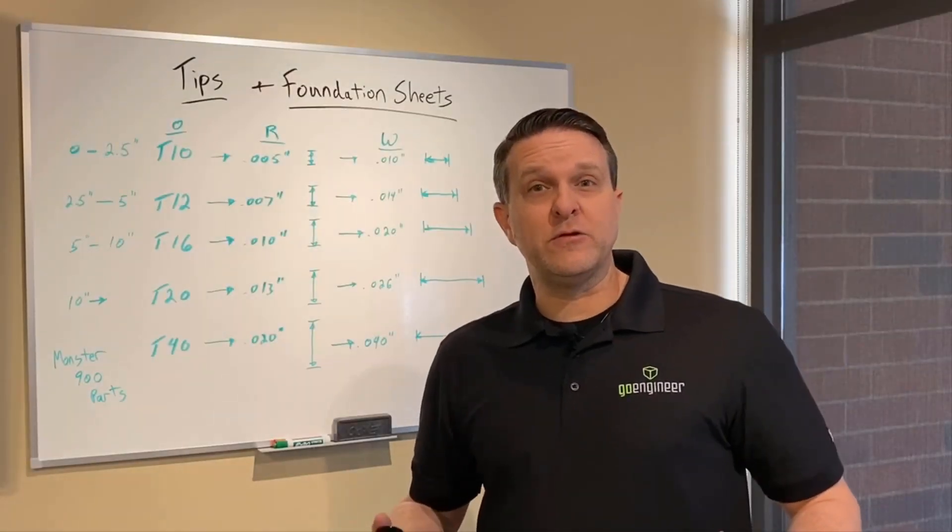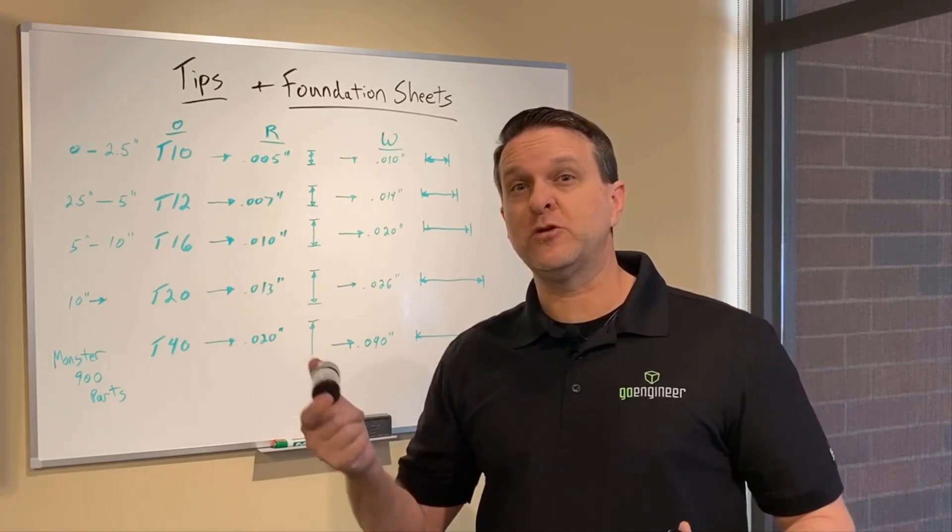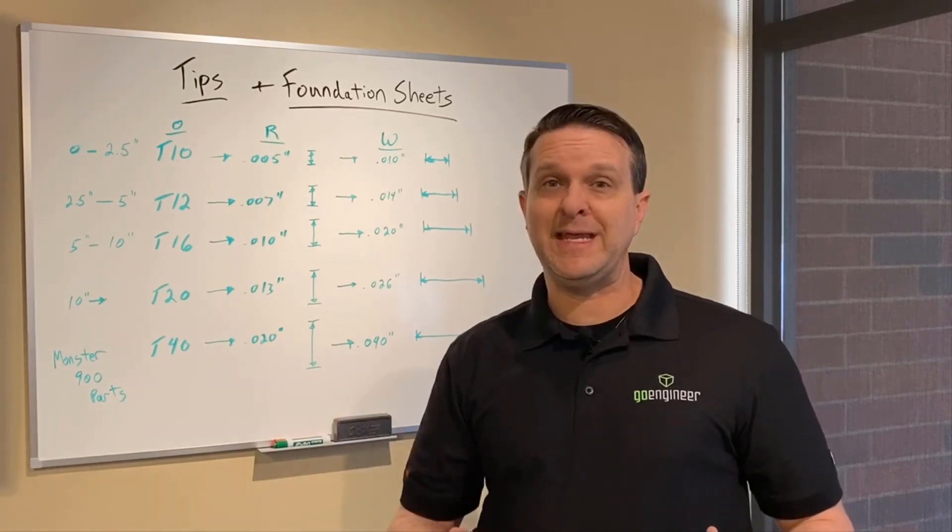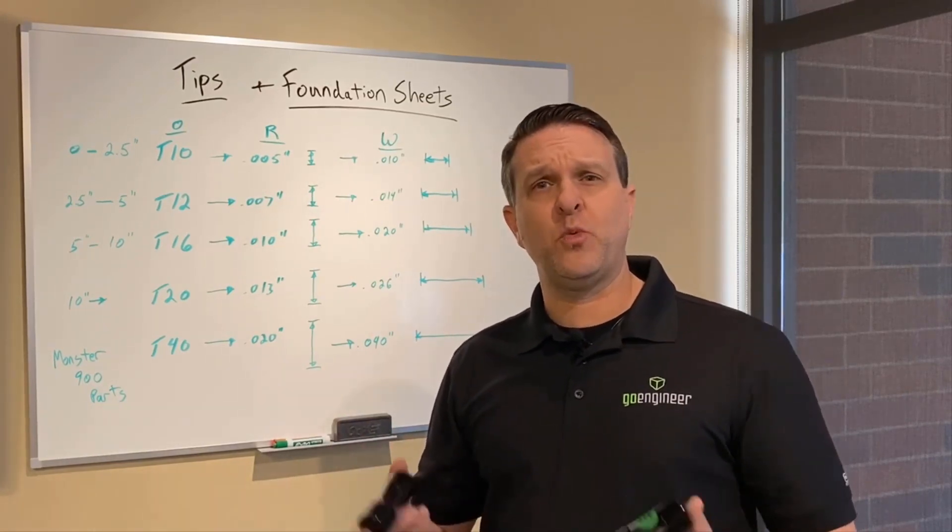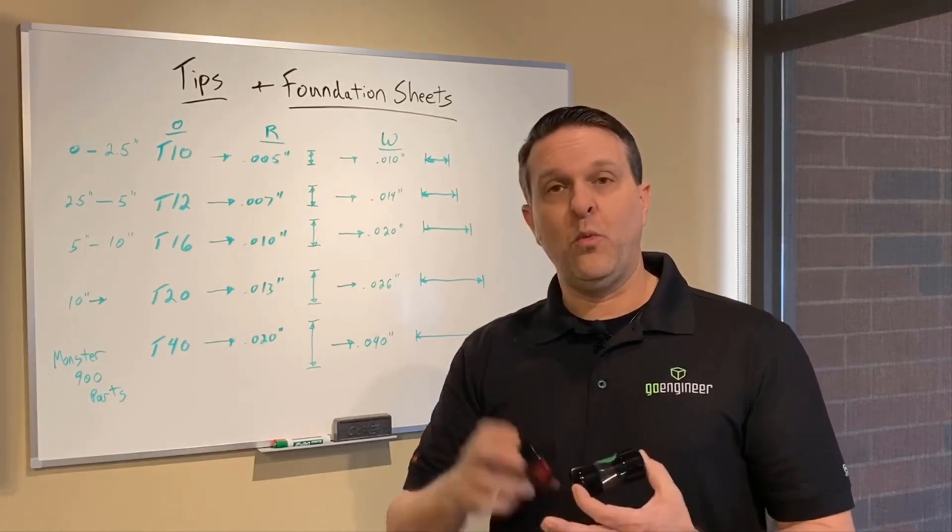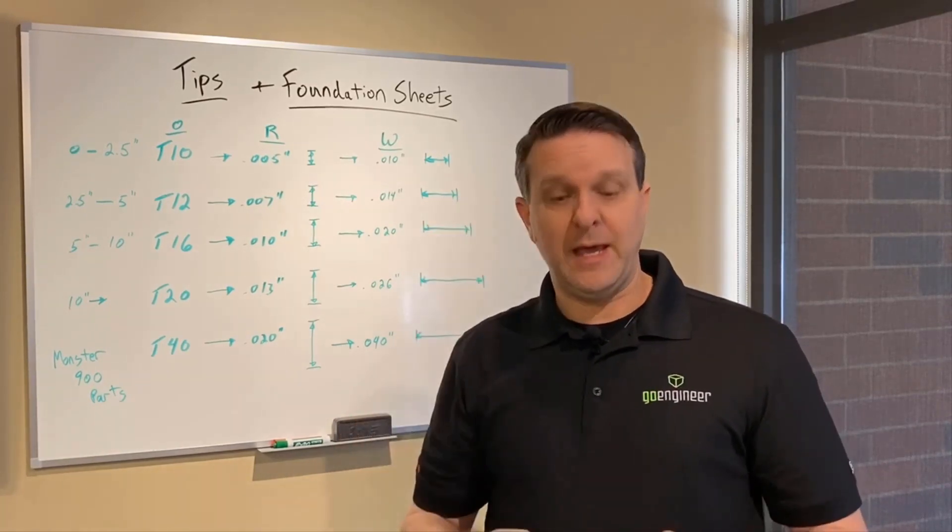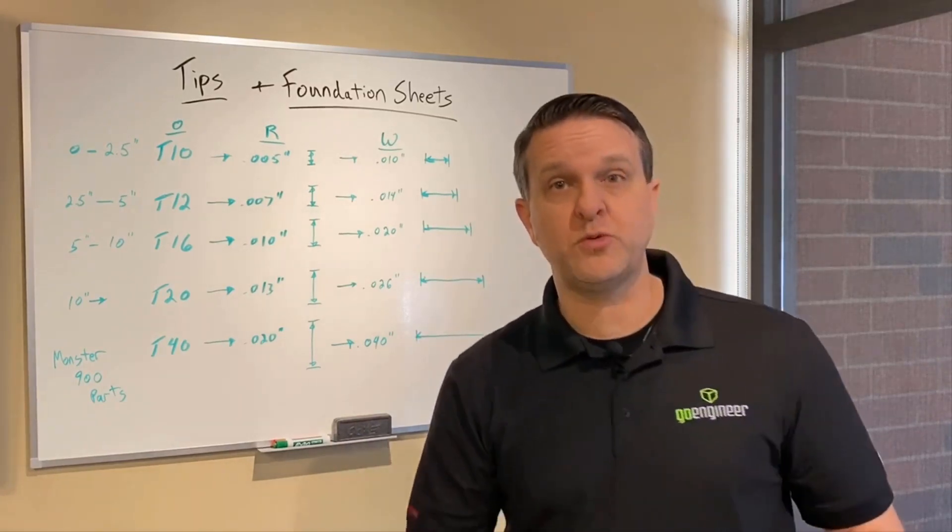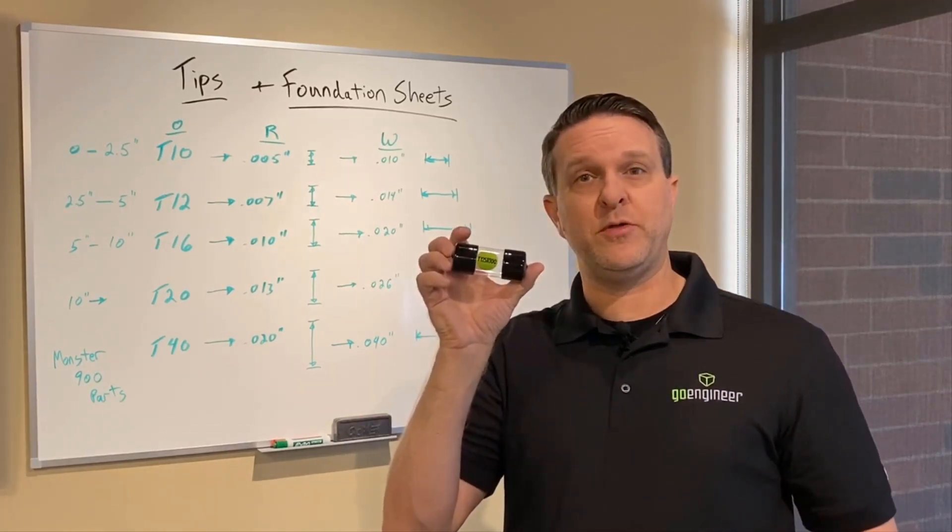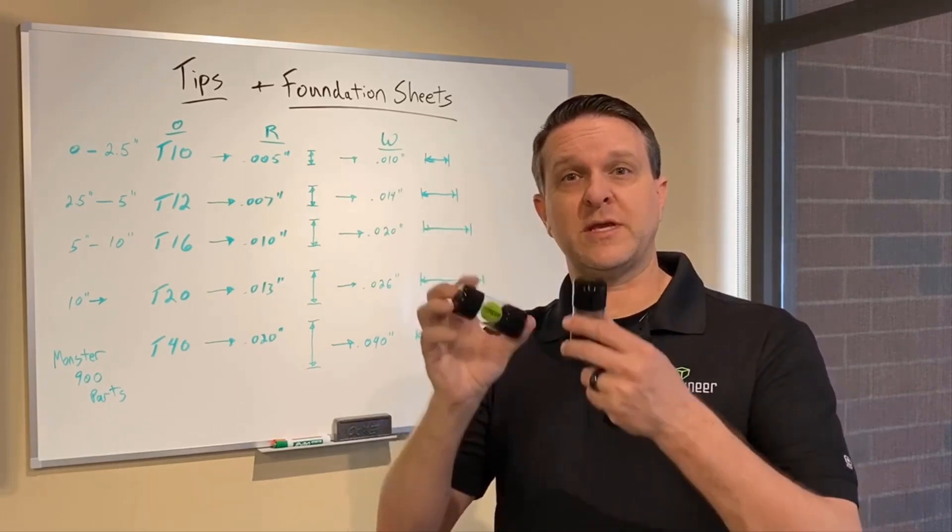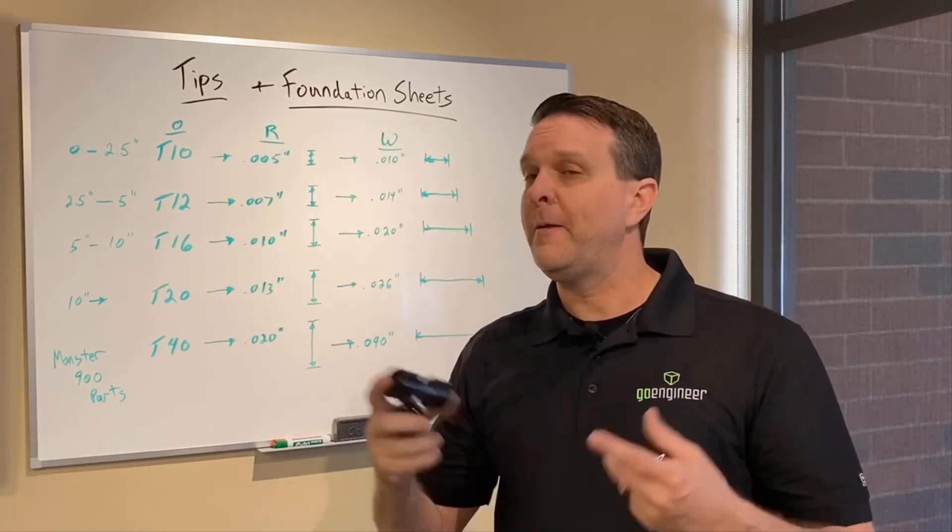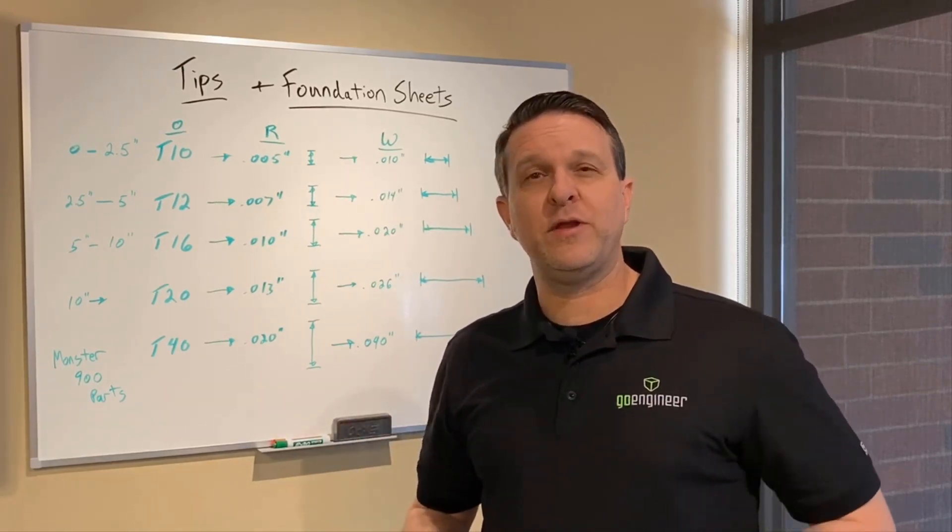Hopefully those two software package breakdowns, GrabCAD Print and Insight, gave you some ideas to where to find the information on when can I use a T12 tip with what material combination, and then what support tip goes with it. Because that question comes up all the time, support tips. What's the combination of model and support? That should give you a pretty good idea where that information is at.